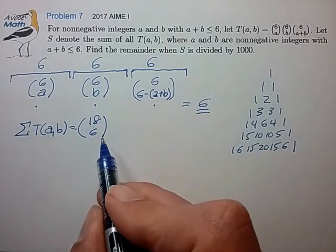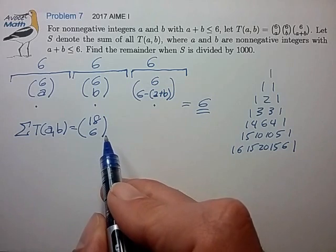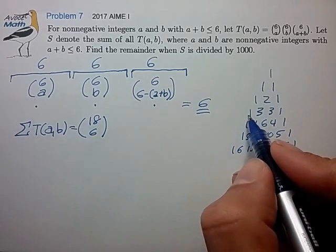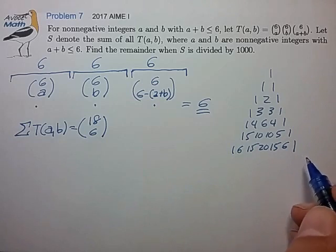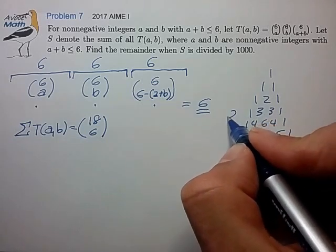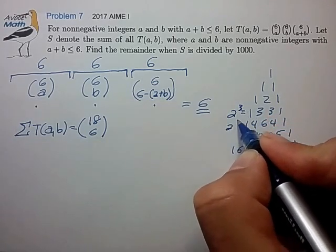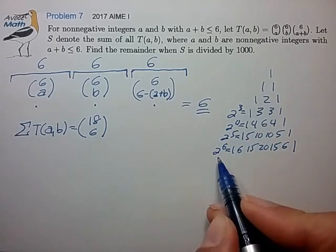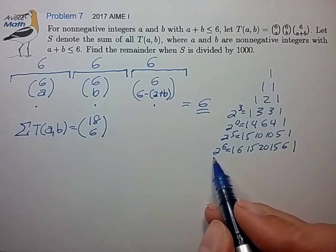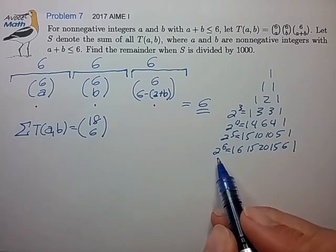And it's kind of similar in a way to the way that you can convince yourself that the sum across a row of Pascal's triangle is just a power of two. Two to the third, two to the fourth, two to the fifth, two to the sixth.